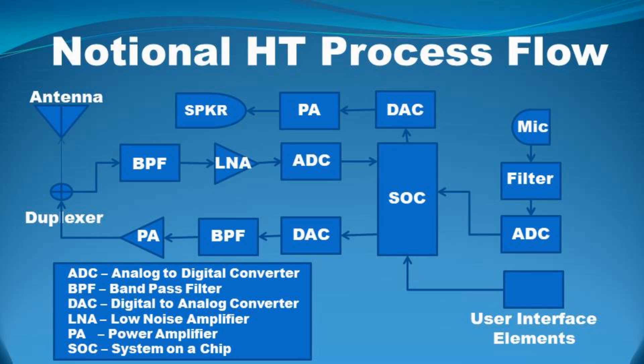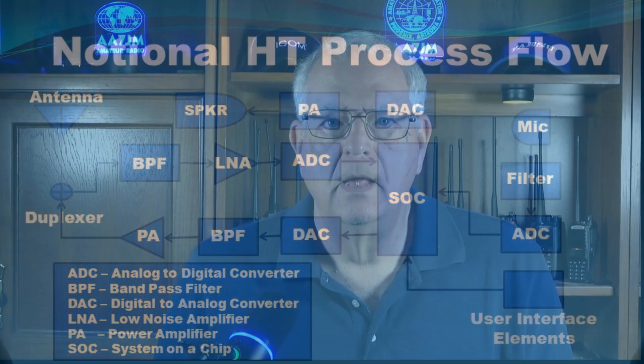On the transmitter side, your voice input via the microphone goes through a similar process. It may include some filtering, an analog-to-digital conversion, processing in the processor, output to a digital-to-analog converter, power amplifier, and then onto the antenna. A duplexer plays traffic cop, making sure incoming and outgoing signals go to the right place. Transceivers of this type usually can receive or transmit, but not both at the same time — these are known as half-duplex devices. More complicated radios can do both at the same time, though not on the same frequency — these are known as full-duplex devices.